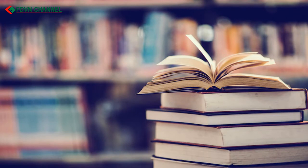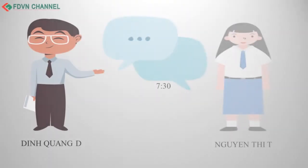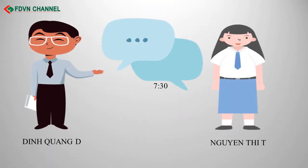Part 3, content of the case. Due to knowing each other before, around 7:30 on April 2, 2017, Nguyen T.T., born August 3, 2001, a 10th grader at the 50th high school, used her mobile phone to text message Din Kuang D, who was a teacher at the school, and made an appointment to meet in D's room.